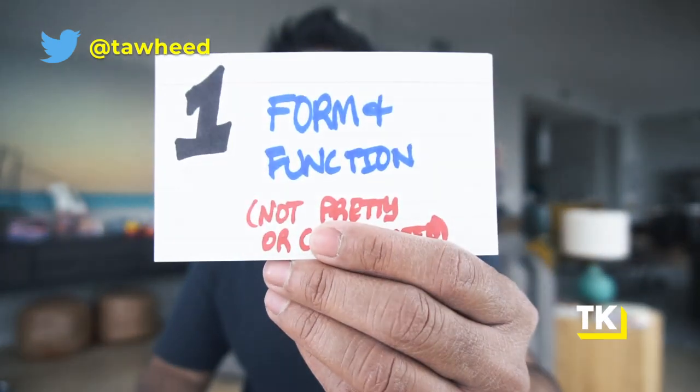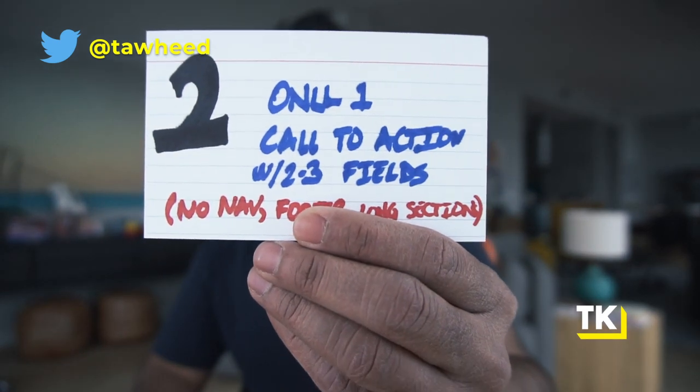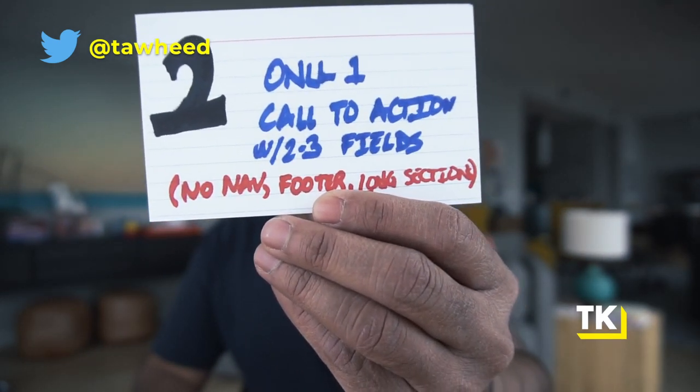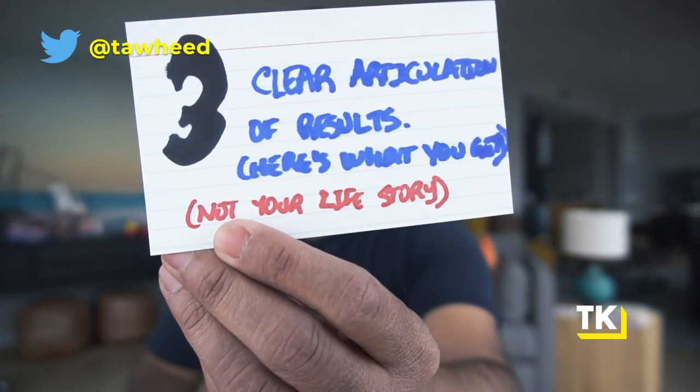So to recap: number one, form and function first — not prettiness. Number two, only one call to action — no nav, no footer, no long sections — just one call to action with two to three fields so all roads lead to that form and they become a lead. And number three, clear articulation of the results they're going to get by filling out this form, so they know: if I give them my email address, here's what I'm going to get — seems worth it. Those are the three core principles, the best practices and worst practices for building a successful landing page.